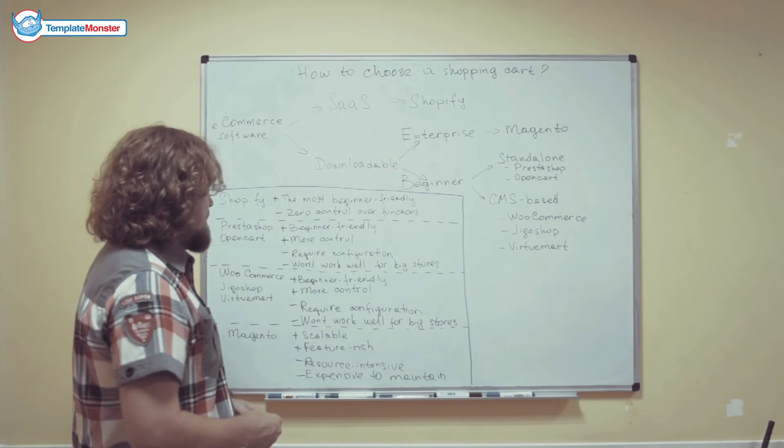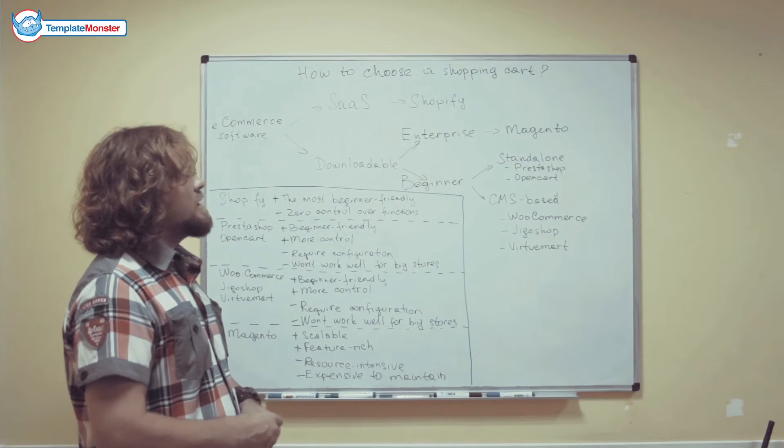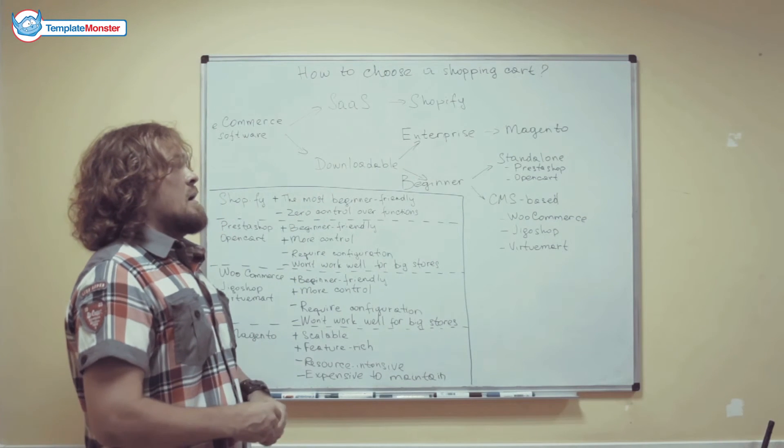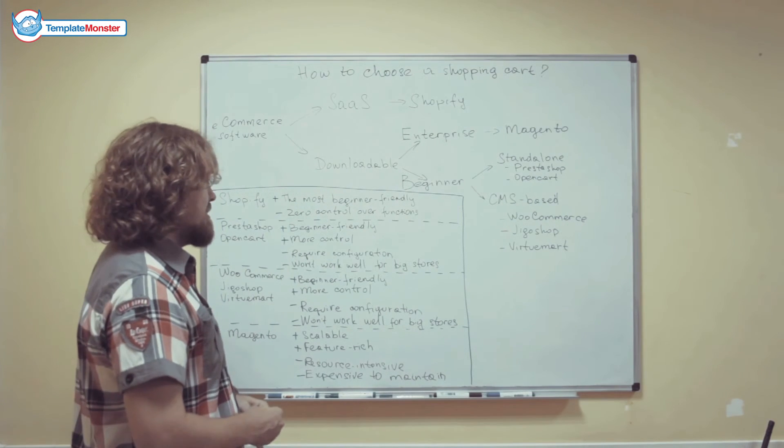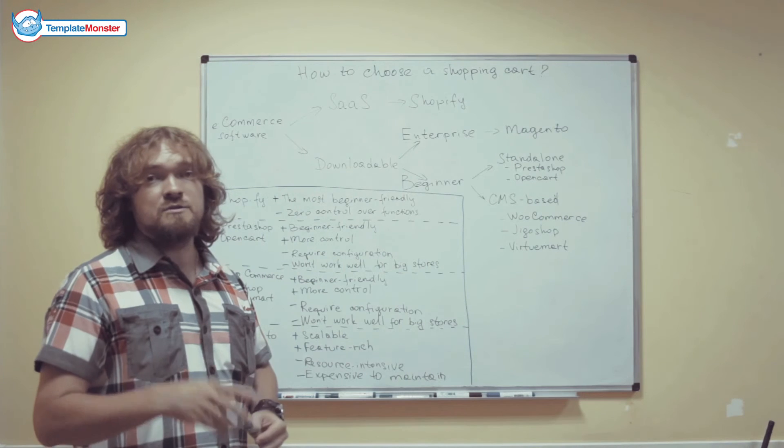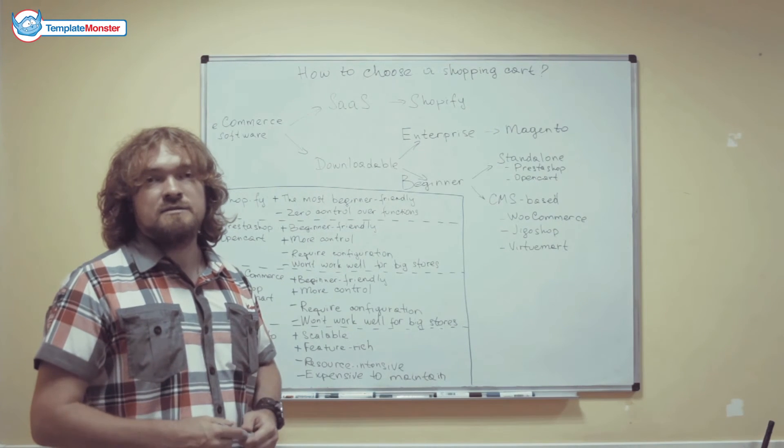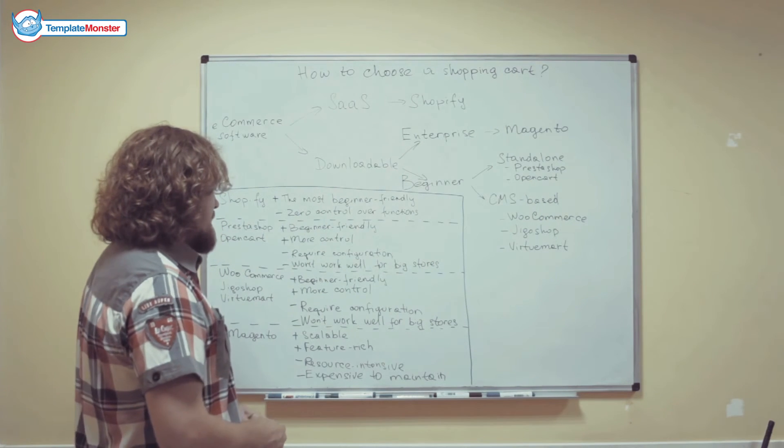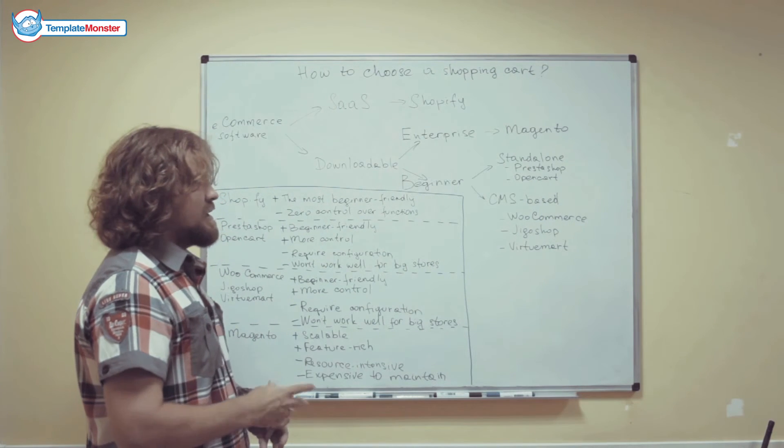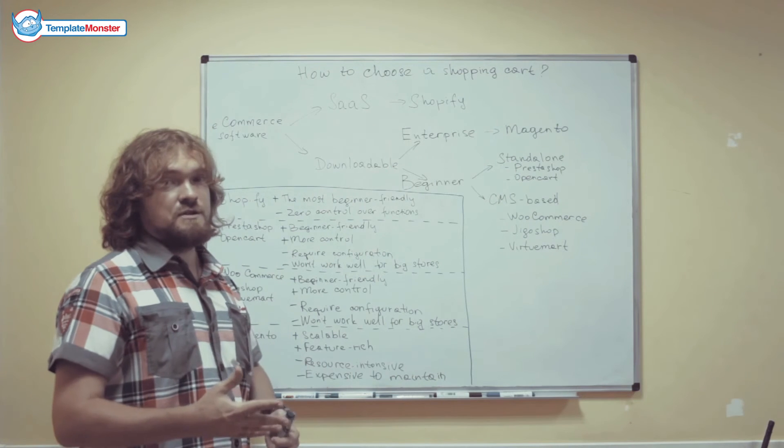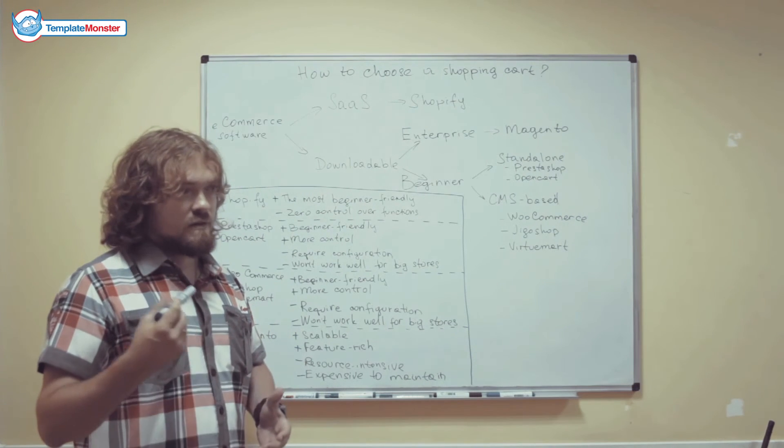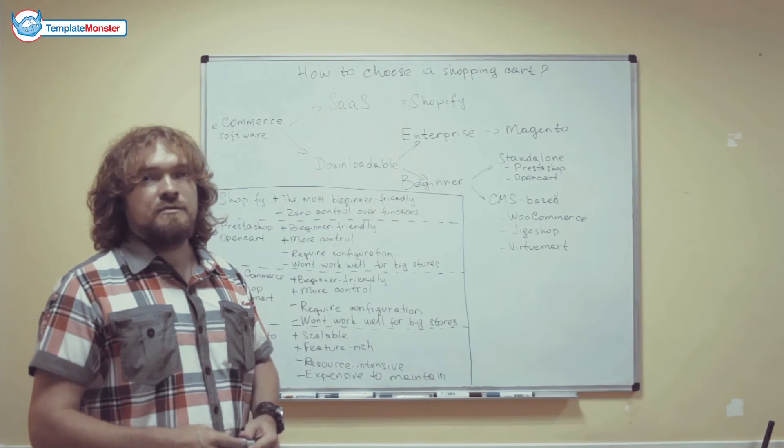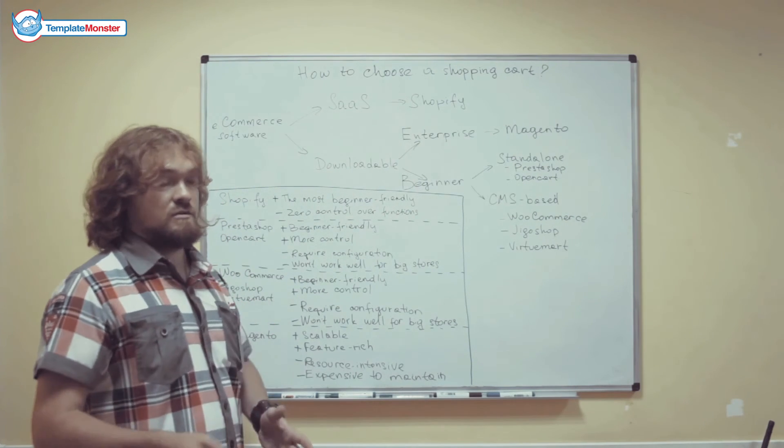So, the last group, the enterprise-friendly software products are the most scalable ones. They are used by the big online stores with thousands of products or even hundreds of thousands of products. It's very scalable and it's very feature-rich. You can integrate virtually anything that you can think of into the Magento-based store, for example.